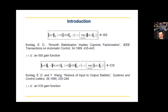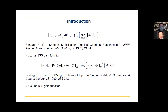This notion was generalized by Sontag and Wang, and this is the iOS property — the input-to-output stability property. Again, this function gamma is called an iOS gain function.